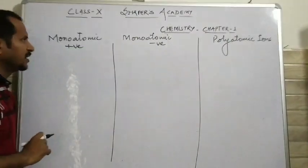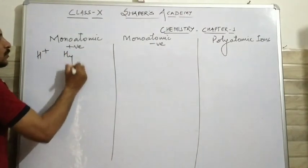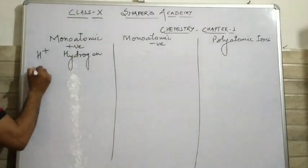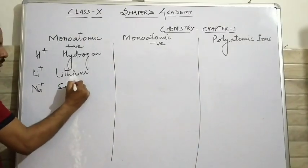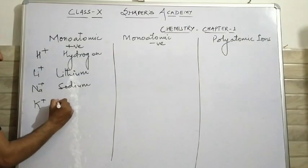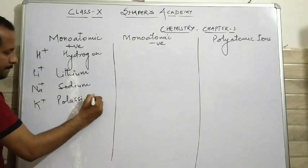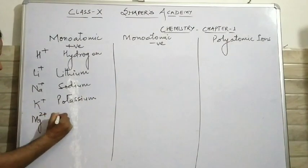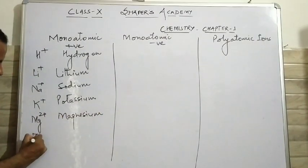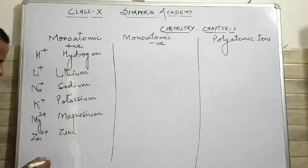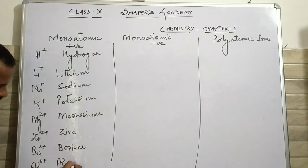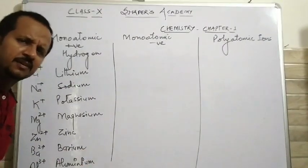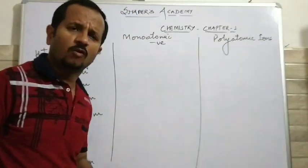Let us take some examples of monoatomic ions. Hydrogen ion, lithium ion, sodium ion, potassium ion, then magnesium, zinc, barium, aluminium. Some of the positive ions are left here and I will let you know about them whenever we do practice of making the formulas.